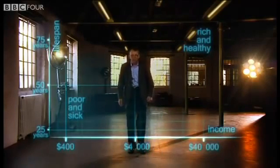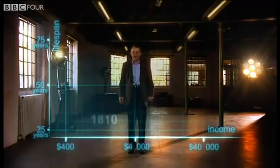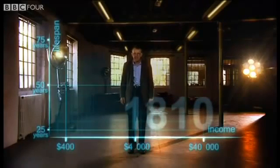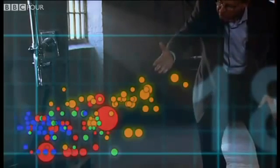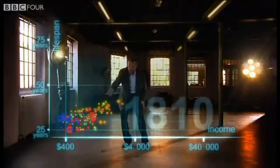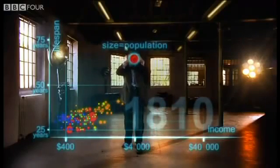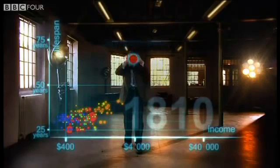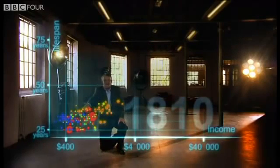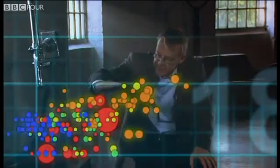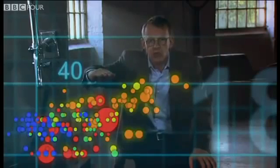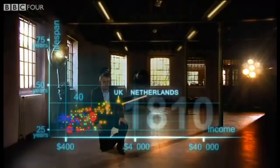Now I'm going to show you the world 200 years ago in 1810. Here come all the countries: Europe brown, Asia red, Middle East green, Africa south of Sahara blue, and the Americas yellow. The size of the country bubble shows the size of the population. And in 1810, it was pretty crowded down there — all countries were sick and poor. Life expectancy was below 40 in all countries, and only the UK and the Netherlands were slightly better off, but not much.